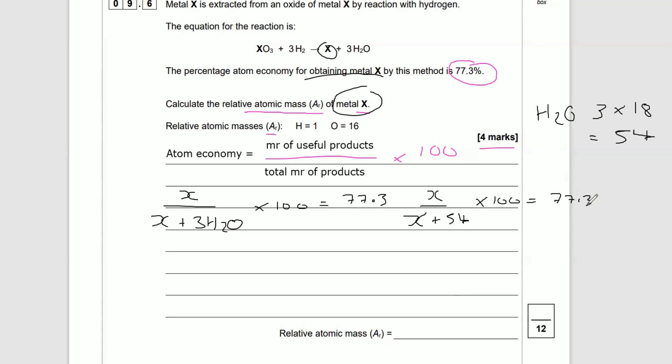So X over X plus 54 times 100 equals 77.3. Now there's two ways to go from here. Some people say, okay, I'm going to divide both sides by 100 to get rid of the times 100.